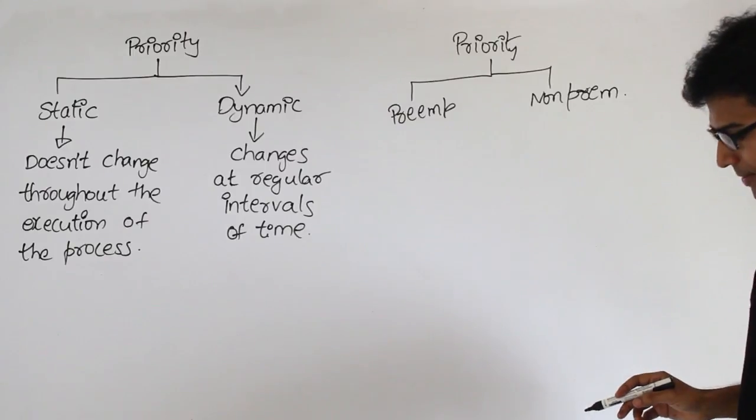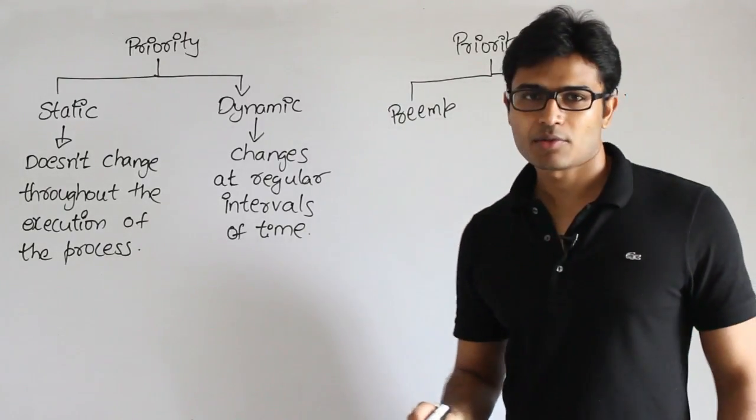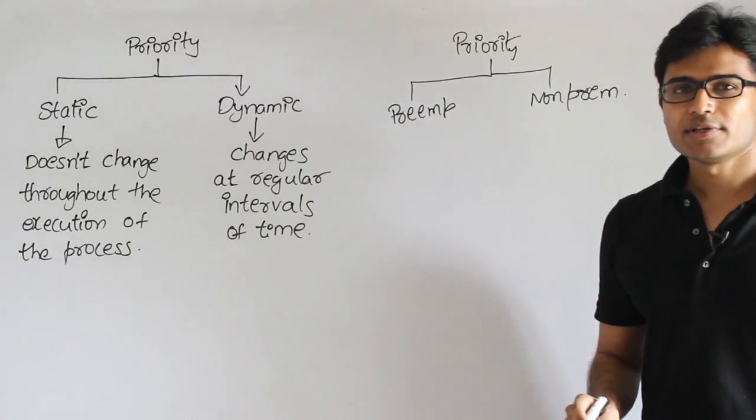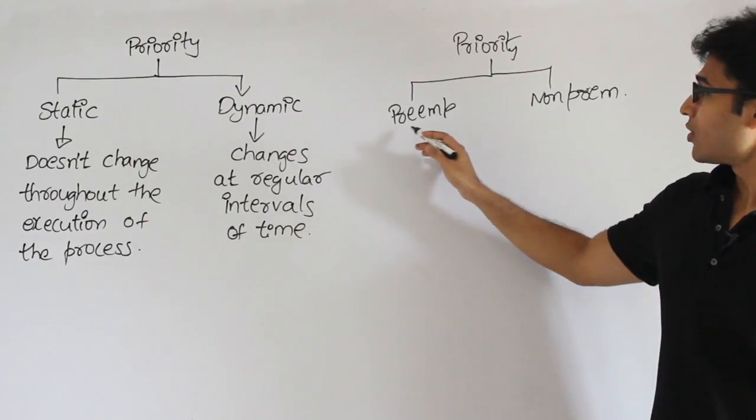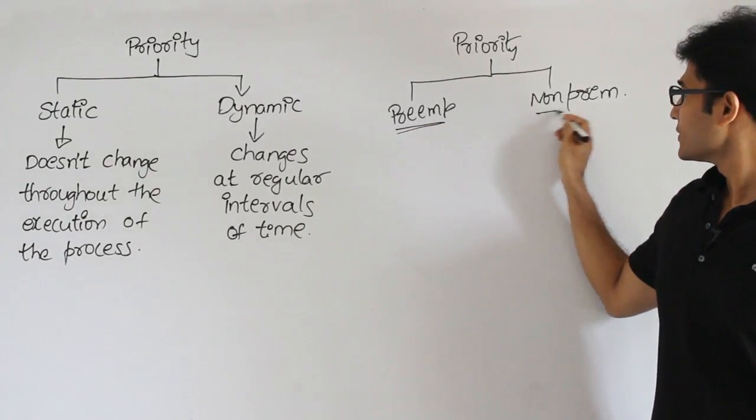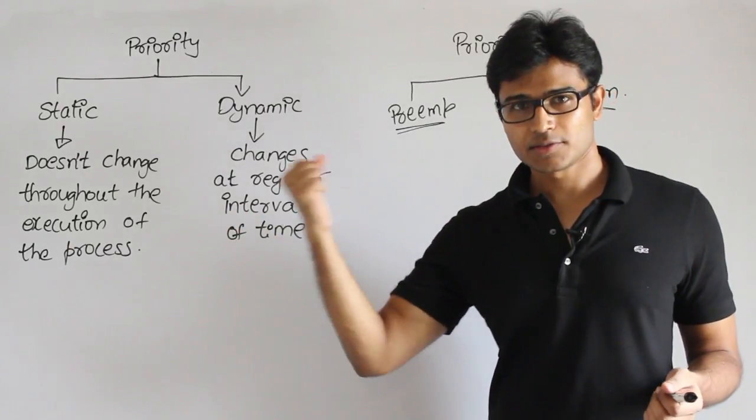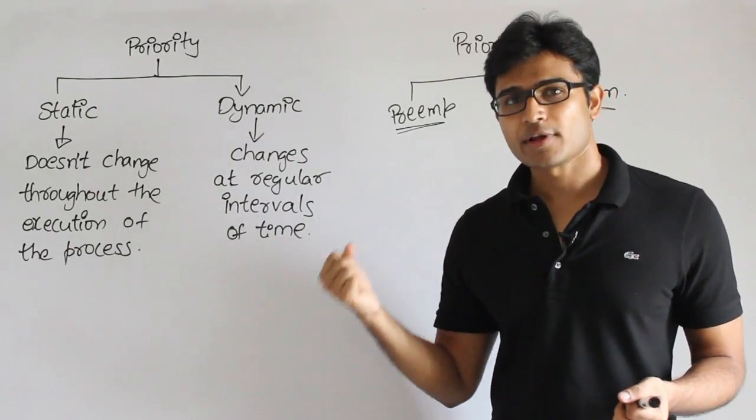Till now we have seen preemptive and non-preemptive versions, right? But the only difference is here: whenever non-preemptive means when we choose a process which is having the highest priority, we are going to run it till completion without stopping it. That is non-preemptive.